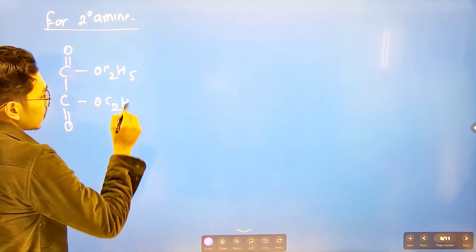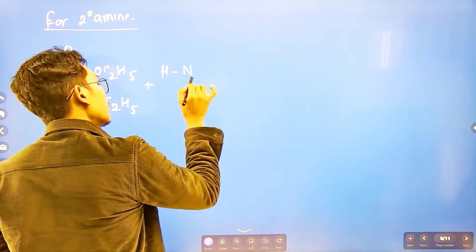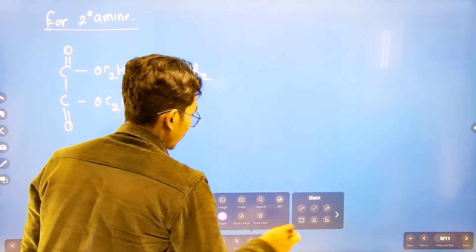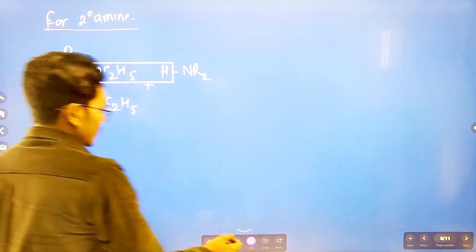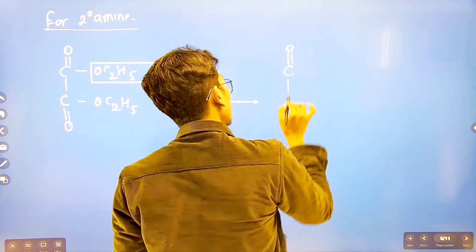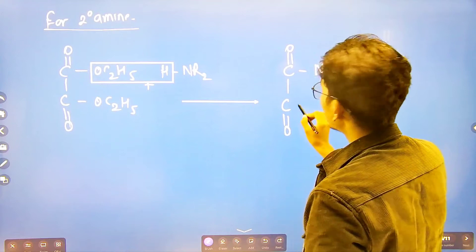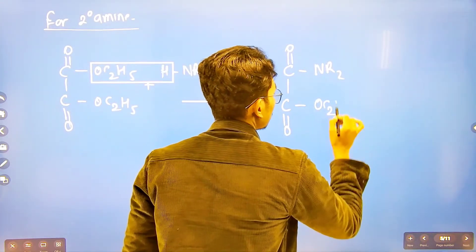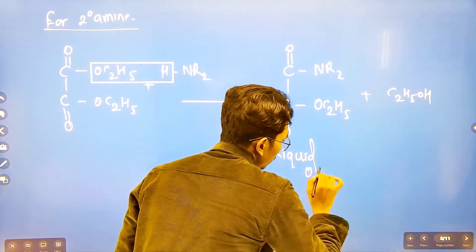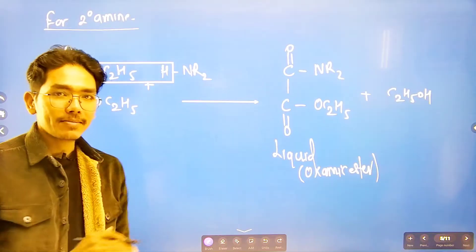For secondary amine, there is only one replaceable hydrogen on nitrogen (R2NH). So the reaction gives a liquid oxamide product, plus C2H5OH (alcohol) is released. The product is called oxamic ester — it is a liquid. So primary amine gives solid, secondary amine gives liquid.